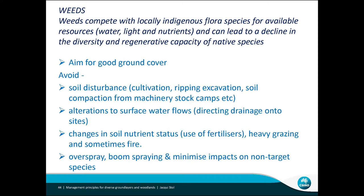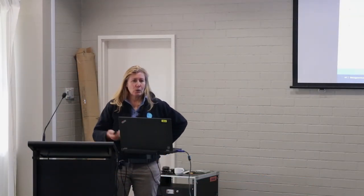Just almost the last slide — weeds. One of the principles for managing the box gum woodlands is trying to minimise those weeds. They're competing with our native species and can lead to a decline in diversity and regenerative capacity. Aim for good ground cover — when you've got 70, 80, 90 percent coverage, it's much harder for weeds to establish. A bit of bare ground is still good, as it allows wildflower species to establish. Try to avoid soil disturbances — cultivation, ripping, alteration to surface water flows, changes in soil nutrient status.